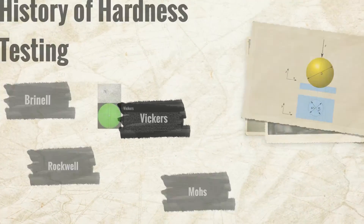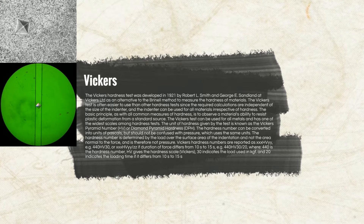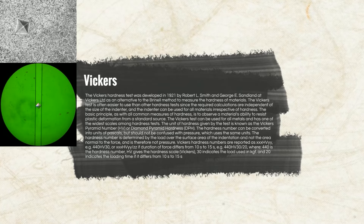After Rockwell came the Vickers method. The Vickers hardness test was developed in 1921 by Robert L. Smith and George E. Sandland at Vickers Ltd as an alternative to the Brinell method. The Vickers test is often easier to use than other hardness tests since the required calculations are independent of the size of the indenter, and the indenter can be used for all materials irrespective of hardness. The basic principle is to observe a material's ability to resist plastic deformation from a standard source. The Vickers test can be used for all metals and is one of the widest scales among hardness tests. The unit of hardness is known as the Vickers Pyramid Number (HV), or Diamond Pyramid Hardness, and can be converted into units of Pascals.